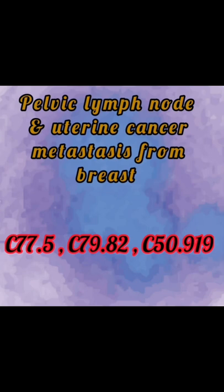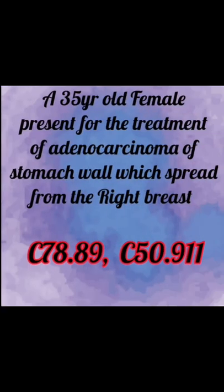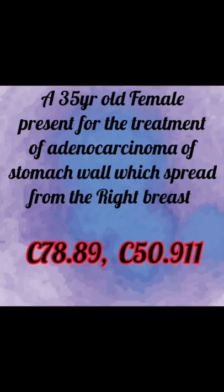Next example: a 35-year-old female presents for treatment of adenocarcinoma of stomach wall which spread from the right breast. The right breast is primary; stomach wall is secondary. Code: C78.89 for secondary adenocarcinoma of stomach wall, and C50.911 for right breast primary.